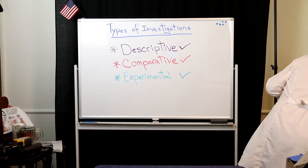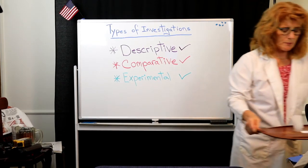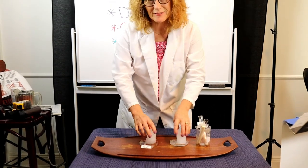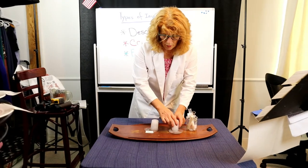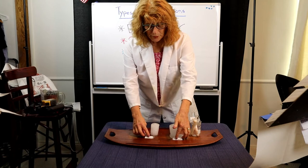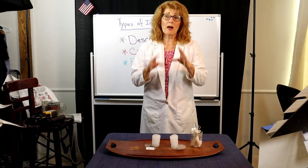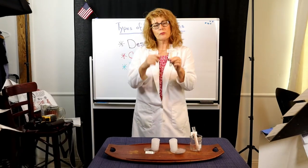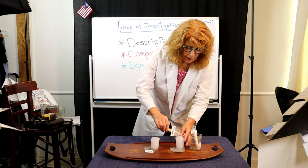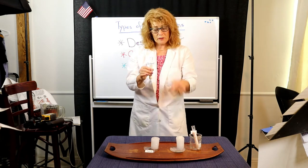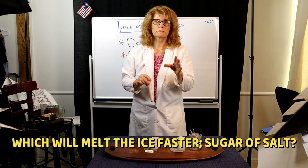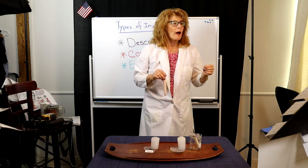Let's take a look at something you could use as a comparative investigation. We're going to look at how fast ice melts. Here we have two blocks of ice that were exactly the same — I'm controlling them because my experiment is to see which one will melt faster. The first one I'll try is with sugar, adding exactly the same amount and sprinkling it on. This is the sugar, and I'm going to compare this in my investigation.